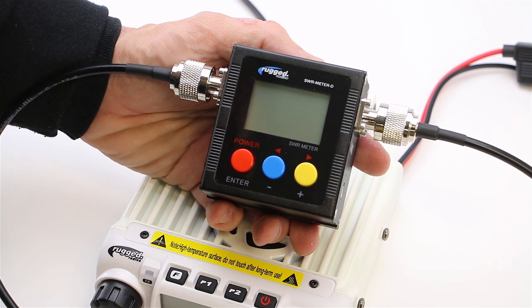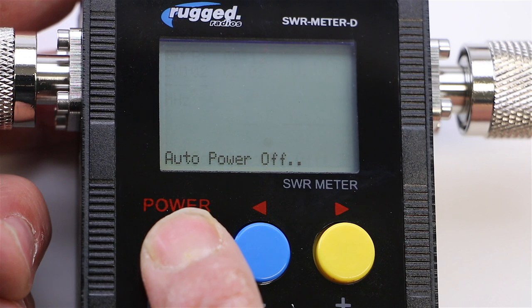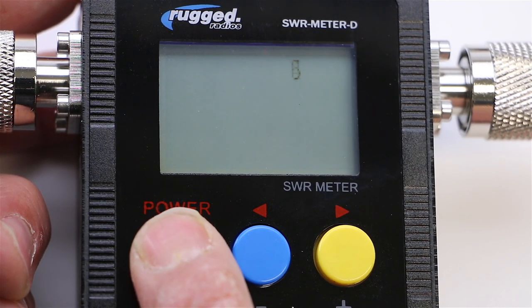If, however, you accidentally change a menu setting, simply power the unit off, then press and hold the red power button until the display reads restore to default.